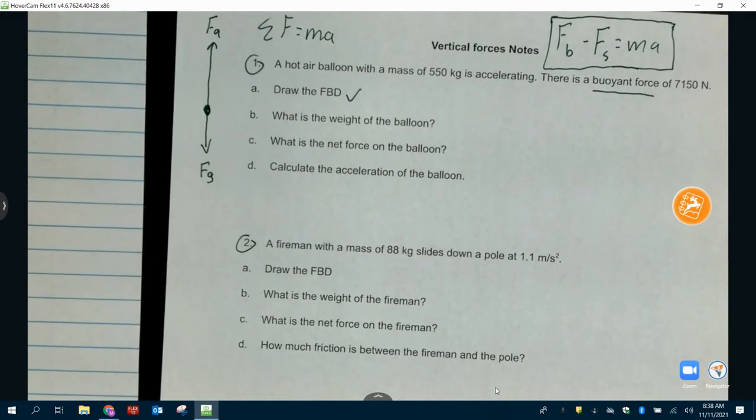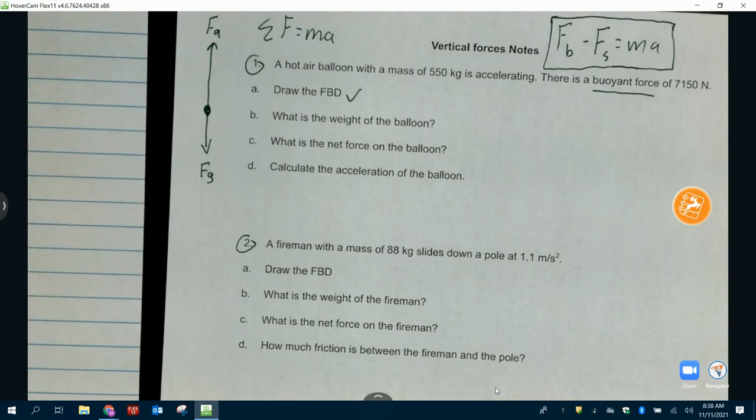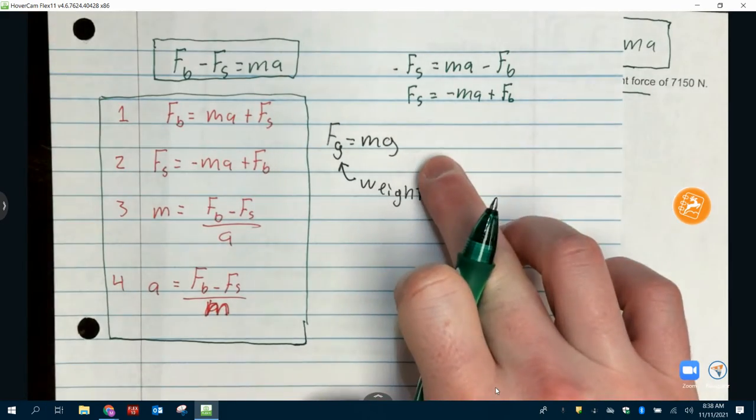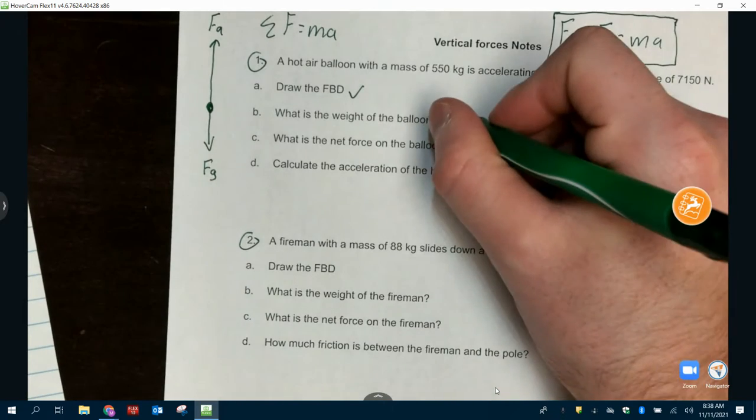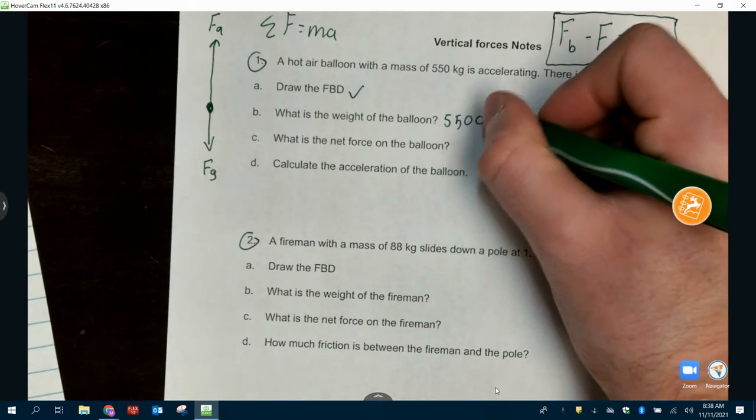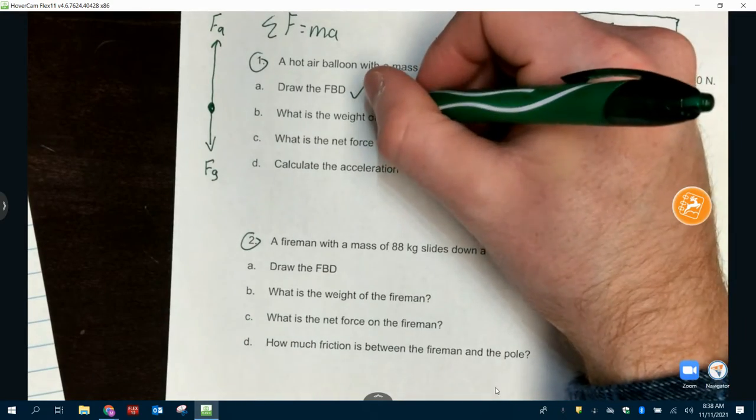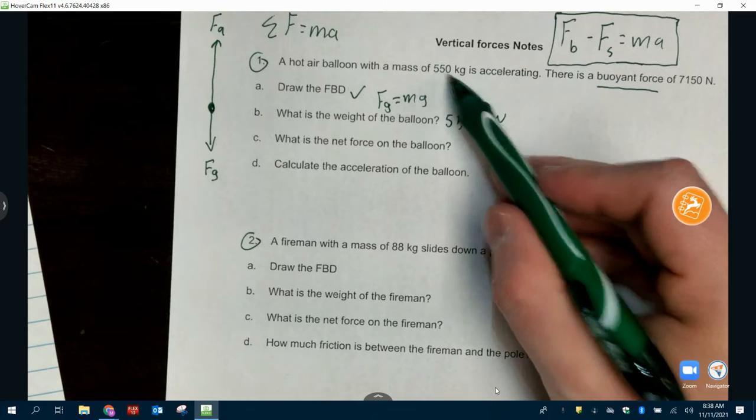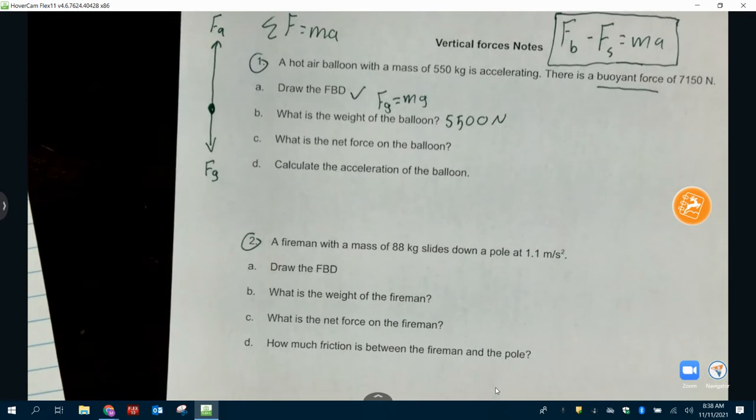Or part A. Part B. What is the weight of balloon? What's weight equal to? Mass times gravity. Our mass is 550 times 10, means we just add a zero. I'm just going to make a little note. That was F_G, which is equal to M times G. So, we did this times 10. Easy peasy.